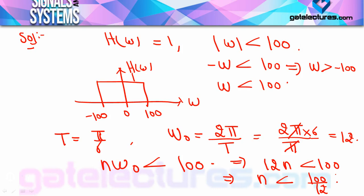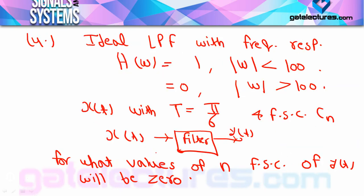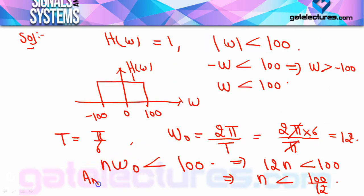n must be an integer — harmonics must have integer n. The maximum value of n is 8, because 12×8 = 96 < 100. When n = 9, nω₀ = 108 > 100, so it will not pass. Therefore the answer is n ≥ 9: for n = 9 and above, the Fourier series coefficient of y(t) is guaranteed to be zero.